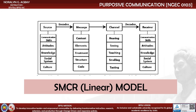Another classic model that explains communication expanded the work of Aristotle by adding sub-elements under each main element from Aristotle's model and also added encoding and decoding. The ideal communication occurs when both sender and receiver have common expertise in communication skills, the same attitude, knowledge, social system, and culture.